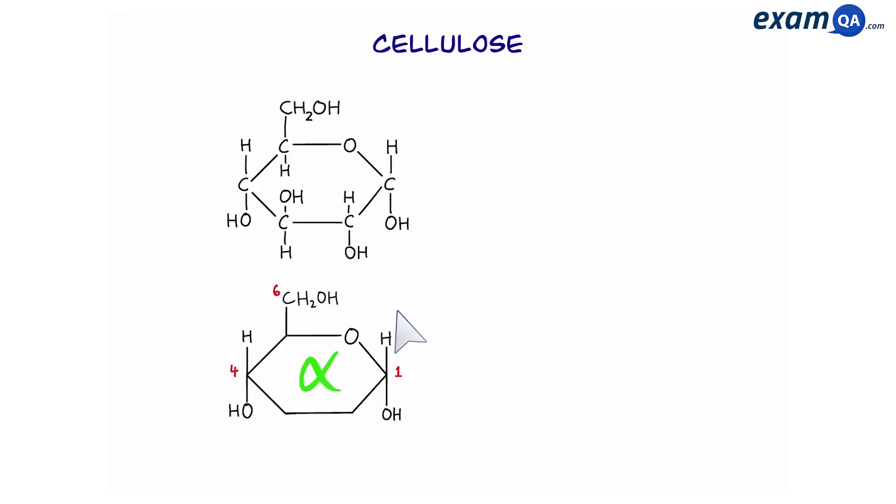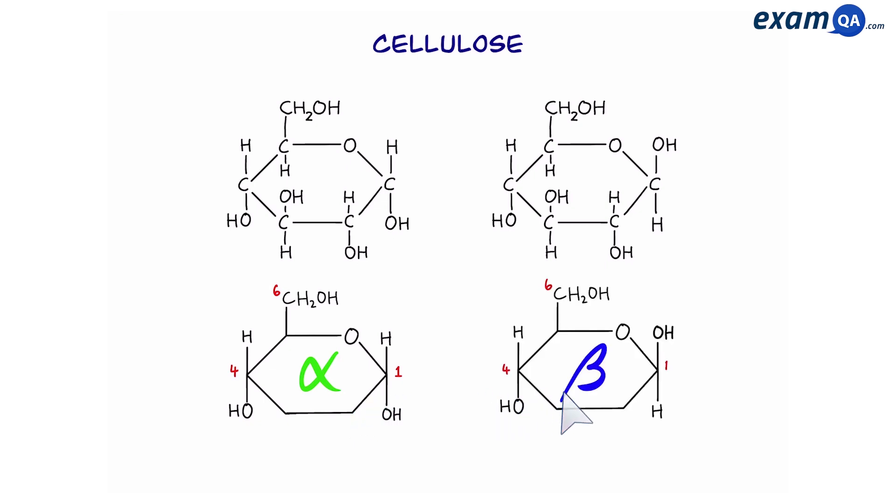So here we have alpha glucose and this is beta glucose. Notice that they both have the same molecular formula. However, the atoms are arranged slightly differently. This means that these two molecules are called isomers.